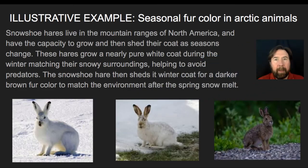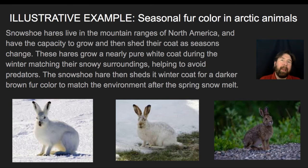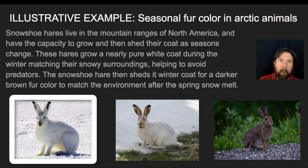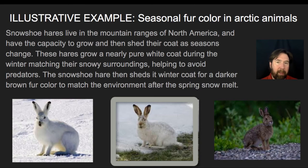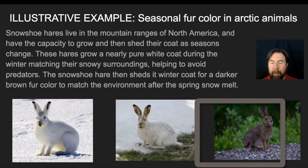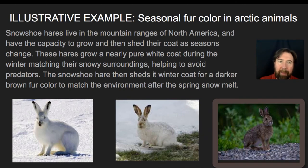Seasonal fur color in animals illustrates temperature effects. Snowshoe hares, which live in mountain ranges in North America, grow and shed their coats with seasonal change. They grow a nearly pure white coat during winter months that helps them avoid predators. As the climate warms, the hare starts to shed that winter coat and becomes darker. By summer, the snowshoe hare has lost all of its white winter coat and shows its fully brown summer coat.